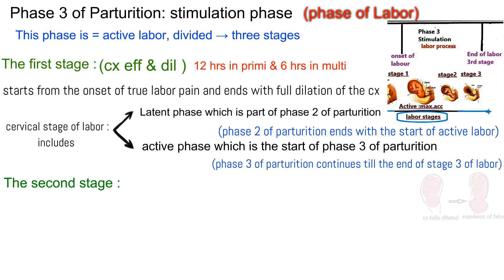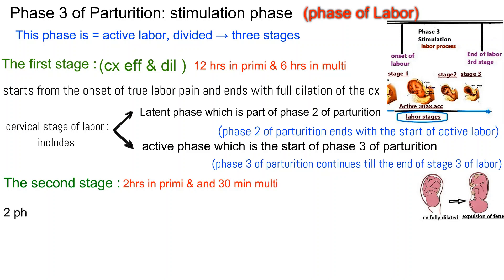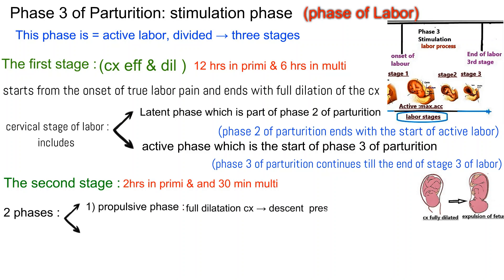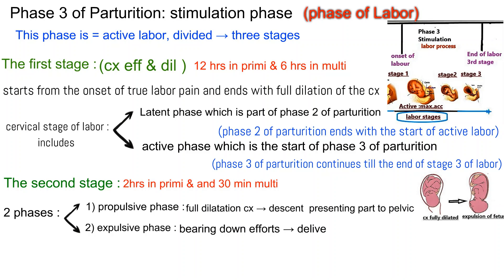The second stage begins when cervical dilatation is complete and ends with expulsion of the fetus from the birth canal. Average duration is 2 hours in primigravida and 30 minutes in multipara. It has two phases: (1) propulsive phase — from full dilatation to descent of the presenting part to the pelvic floor; (2) expulsive phase — distinguished by maternal bearing-down efforts, ending with delivery of the baby.